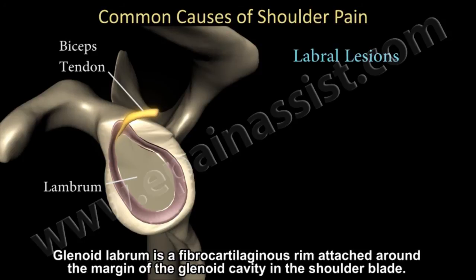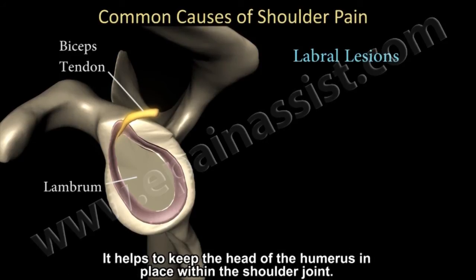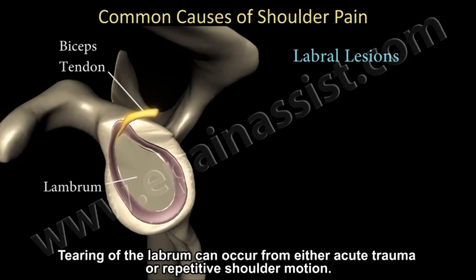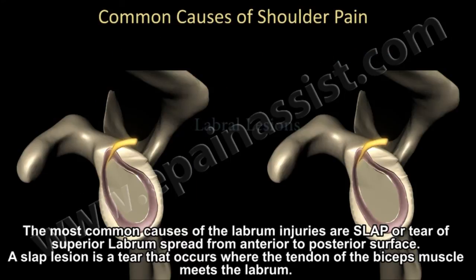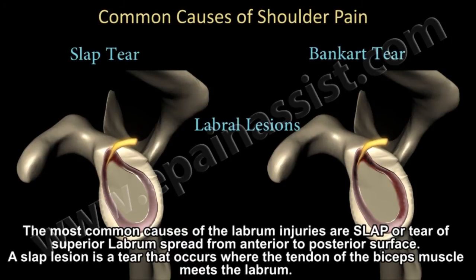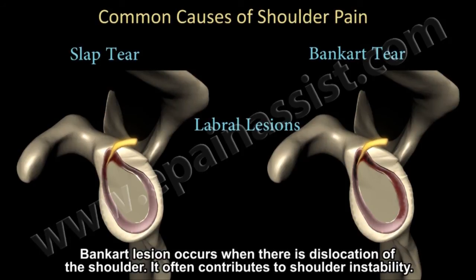Labral lesions also cause pain. The glenoid labrum is a fibrocartilaginous ring around the margin of the glenoid cavity of the shoulder, which helps to keep the head of the humerus in place within the shoulder joint. Tearing of the fibrocartilaginous labrum can occur from either acute trauma or repetitive shoulder motion. The most common cause is a SLAP tear — a tear of the superior labrum from anterior to posterior surface. A SLAP lesion is a tear that occurs where the tendon of the bicep muscle meets the labrum. Another lesion, called a Bankart lesion, occurs with dislocation of the shoulder and often contributes to shoulder instability.